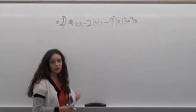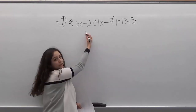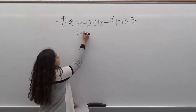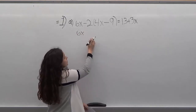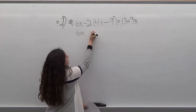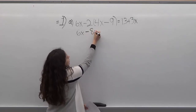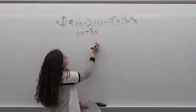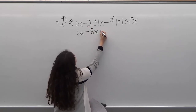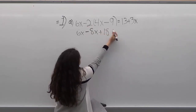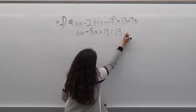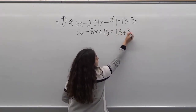So the first thing that we want to do is distribute negative two. When we do that we're going to get 6x minus 2 times 4x, which is minus 8x, and then minus 2 times minus 9 which is 18, and then bring this down: 13 plus 3x.